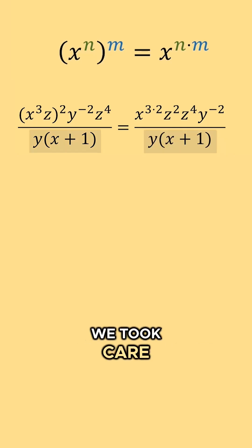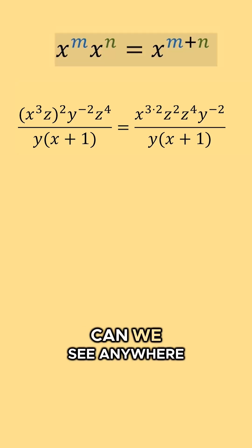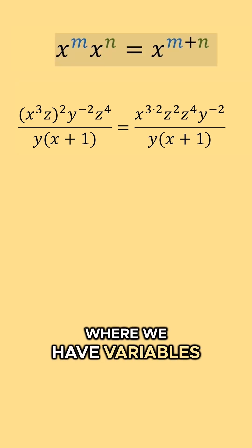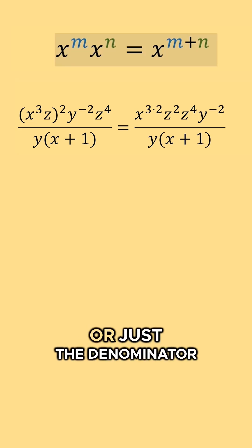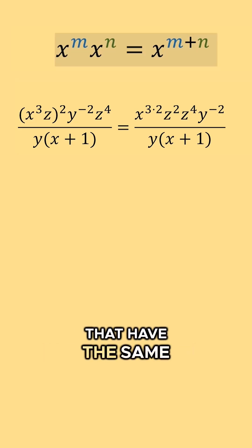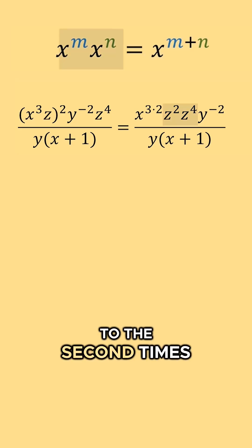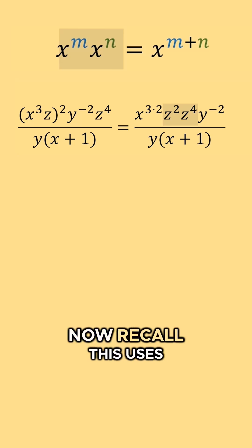So now that we took care of all of our powers raised to another power, let's take care of the products of variables. In other words, can we see anywhere where we have variables within just the numerator or just the denominator that have the same base or the same variable raised to a power multiplied by each other? Well, it looks like in our numerator we have z to the second times z to the fourth. Now recall, this uses the product rule.